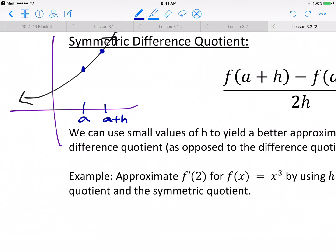Instead of dealing with just the point a and the point f of a, or x equals a and x equals a plus h, you're introduced with another point right there, namely, we'll call it a minus h. So it's the same distance away to the left side.